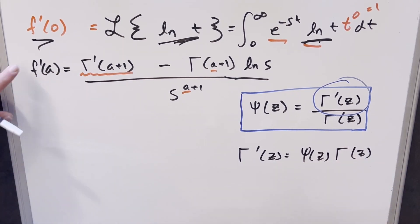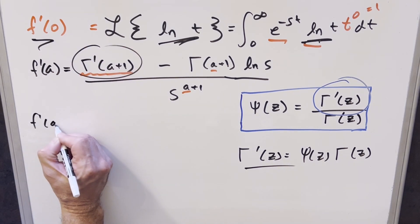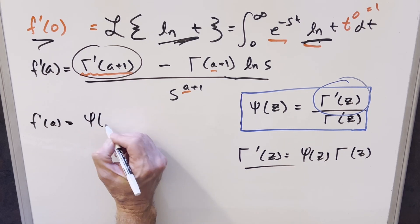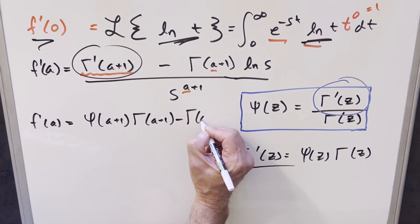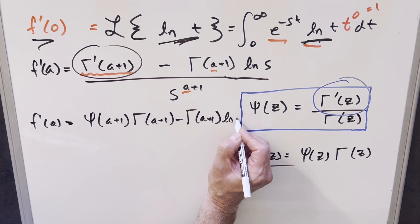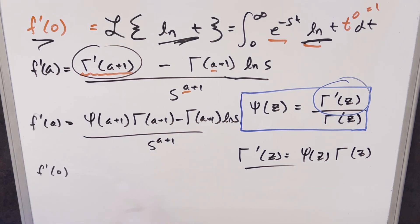So then let's just rewrite our F prime of A using this formula right here, plugging this in for this. What's going to happen now, our Z value is going to be A plus 1, so this is going to become digamma A plus 1, gamma A plus 1, minus gamma A plus 1, natural log S over S to the A plus 1. But now when we try to get our F prime 0 value, what's going to happen? Everything is going to simplify pretty nice. We're going to have digamma 1, gamma 1 here, just plugging this for the A's. Then we have another gamma 1, natural log S, and then here we get S to the 1, which is just S.